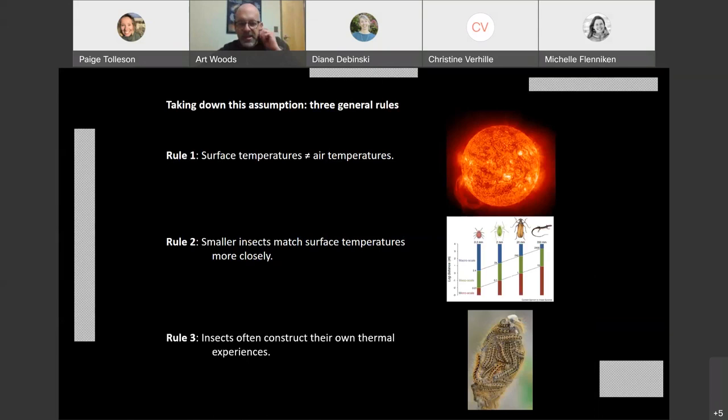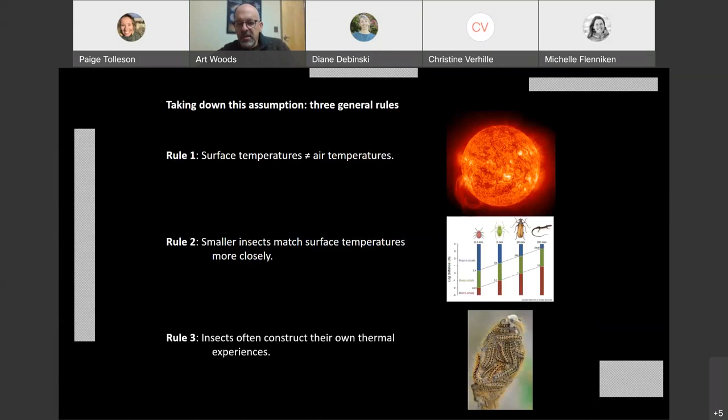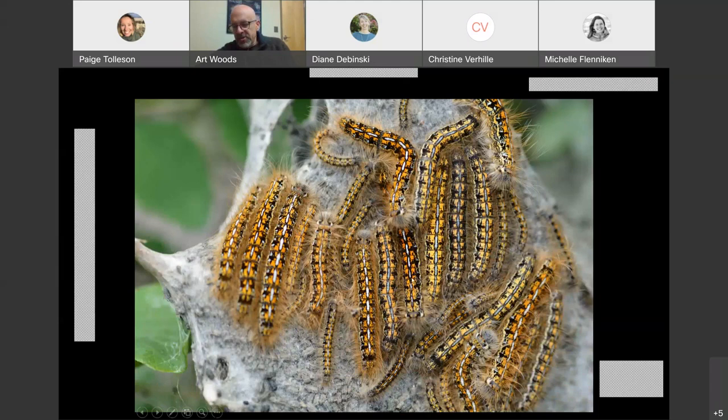Last rule is that insects themselves often construct their own thermal experiences using their extended phenotypes. Here's an example that we've worked on in west central Montana. These are tent caterpillars in the genus Malacosoma. A lot of people view these as a drag. They're pests on trees in their yard that people like. People generally detest these caterpillars. But they're super interesting and beautiful in their own way. This is a group of siblings that all hatched out at about the same time and they've collectively built this tent, which is a silk structure. Every day each of the caterpillars spends some time.